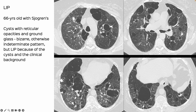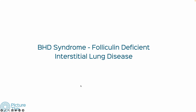This is classic LIP: bizarre cysts, perivascular, reticular opacities, traction bronchiectasis, ground glass. So we have an interstitial lung disease with bizarre cysts in a patient who has Sjogren's — that is lymphoid interstitial pneumonia.